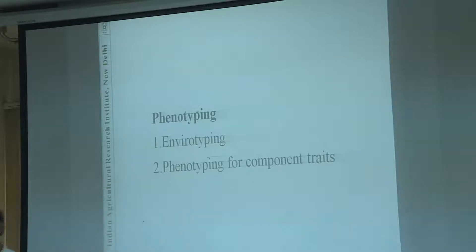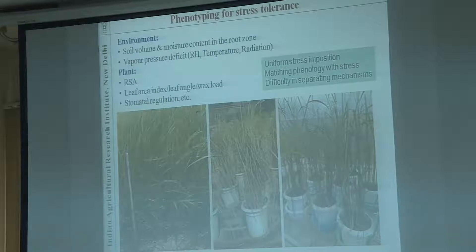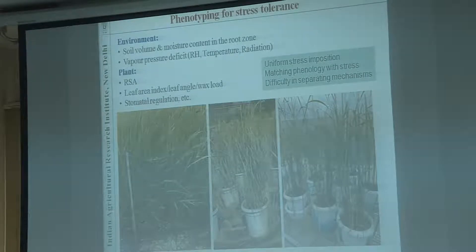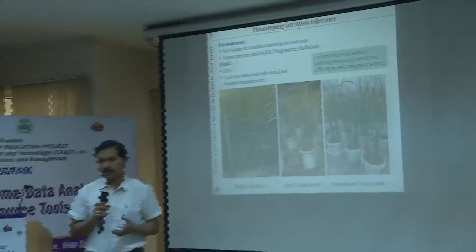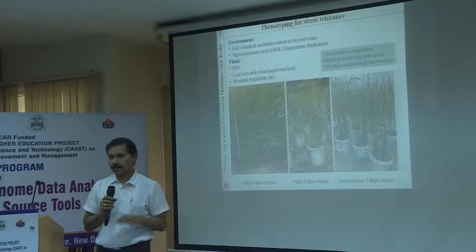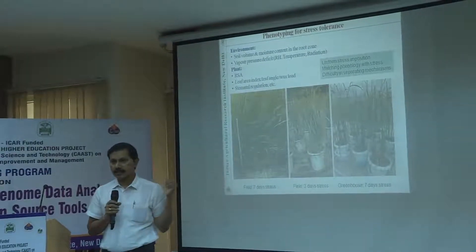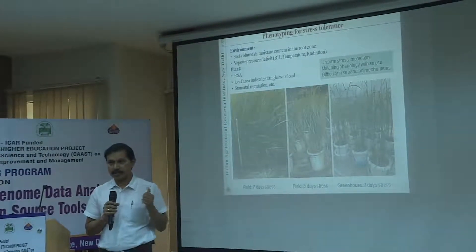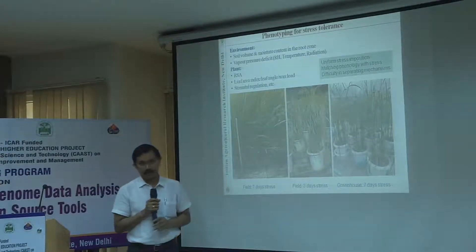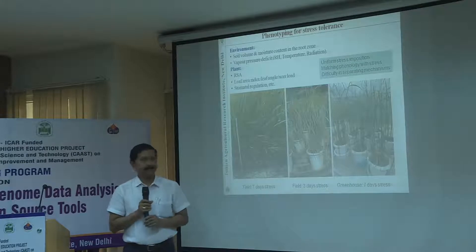Envirotyping and phenotyping for the component trait. The first part is very important: envirotyping. The way you grow, or the environment in which you grow, decides what phenotype you see. That's why, as shown in the slide, phenotype is G into E. So E plays a very important role in many cases.